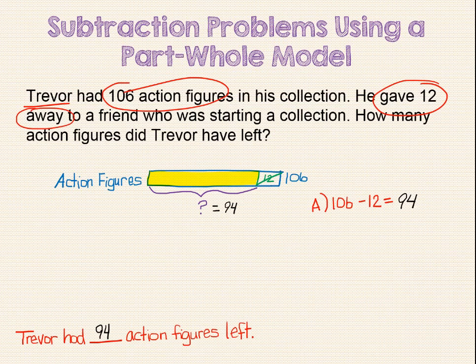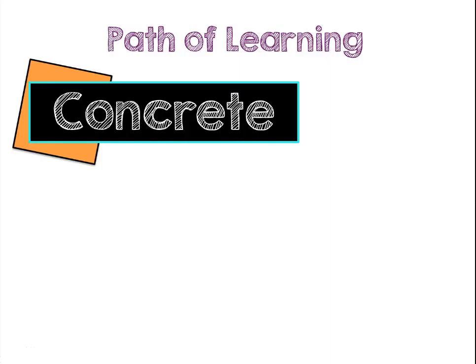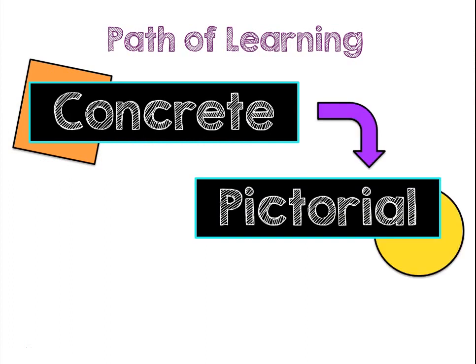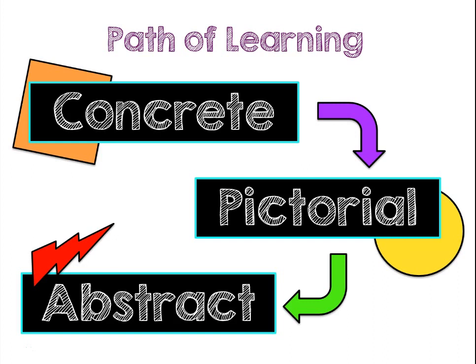Some students might not need or want to use a bar model, and that is okay too. If they understand the problem enough to go straight to the algorithm, then they should absolutely do that. It is quicker, and ultimately this is where we are taking them — towards abstract thinking. Singapore math goes from the concrete to the pictorial, and then finally to the abstract. Bar modeling is a pictorial representation.